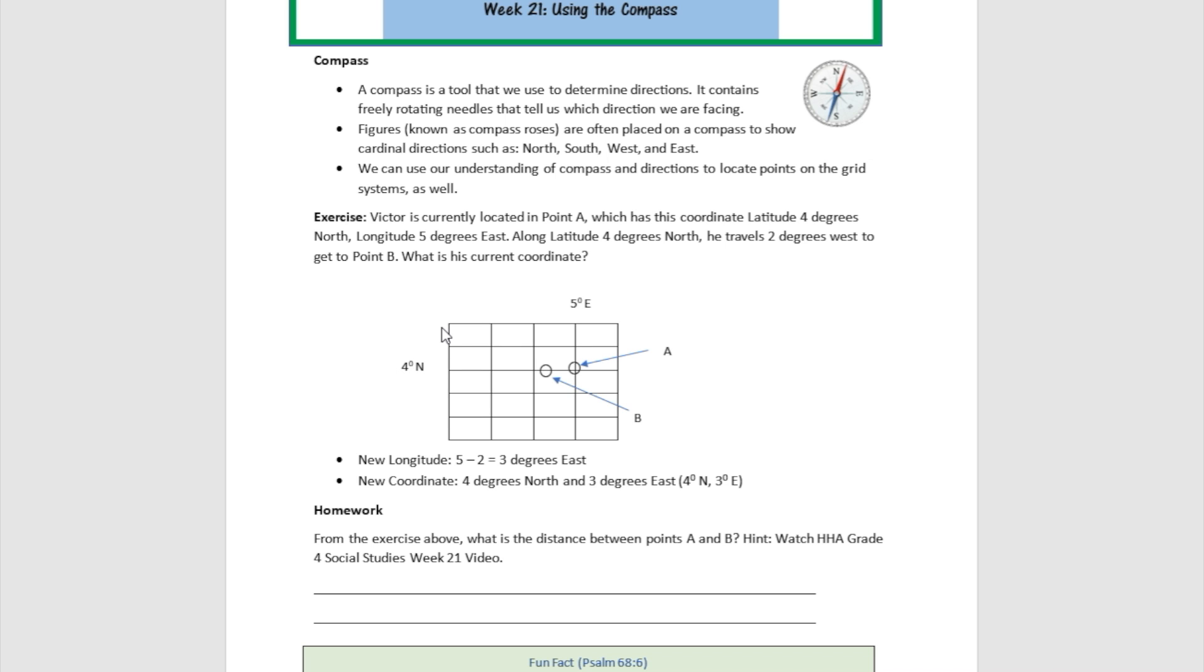Let us look at this exercise to see how we can apply this knowledge in practical terms. Victor is currently located in point A, which has this coordinate: latitude four degrees north and longitude five degrees east. So this is point A here. Along latitude four degrees north, he travels two degrees west to get to point B. So Victor started from here, and he moved over here, and he traveled two degrees west. So what is his current coordinate?